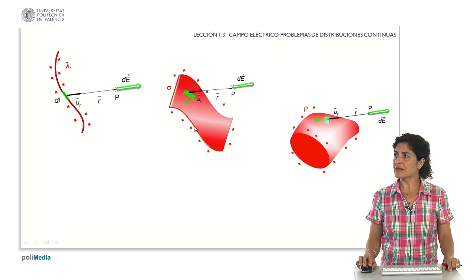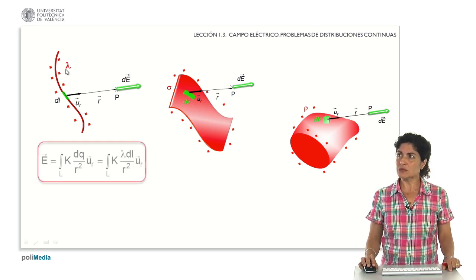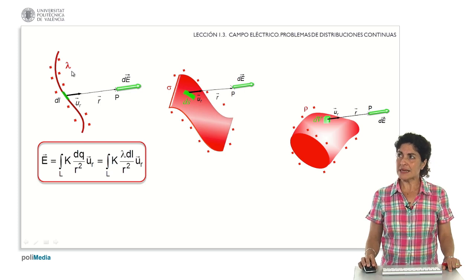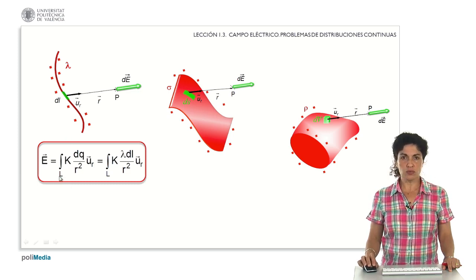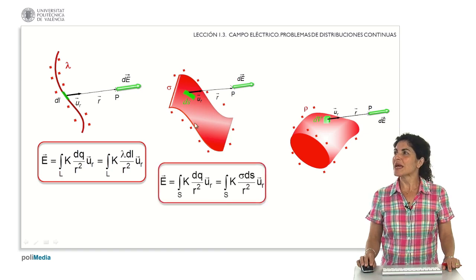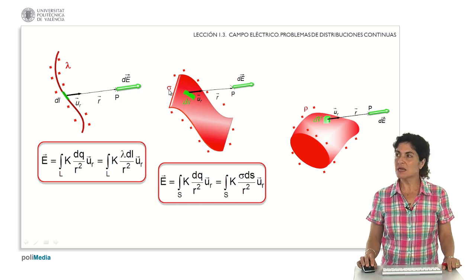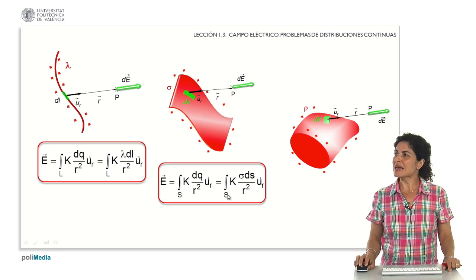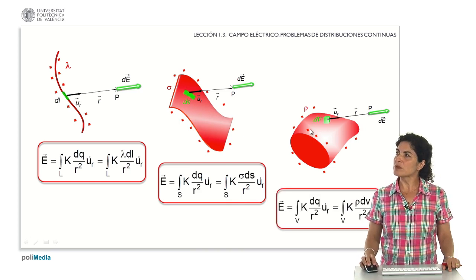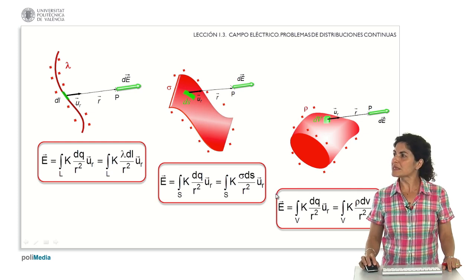For each of these cases: in a longitudinal distribution, we determine the charge distribution by means of the longitudinal density lambda, and calculate the global electric field by integrating over the whole length. For a surface distribution characterized by the sigma parameter, we extend the integral to the entire charge surface. For the volume case, the volumetric charge density characterizes the distribution and we integrate over the entire charge volume.